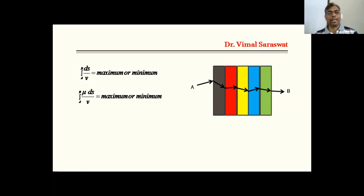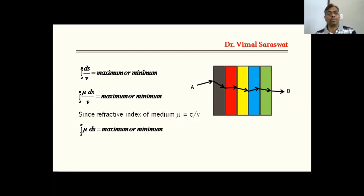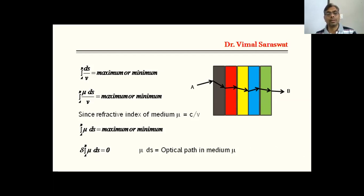Or, the integral from A to B of mu times ds is equal to maximum or minimum, since the refractive index of a medium mu is equal to c over v, where c is the velocity of light in vacuum and v is the velocity of light in the medium. So the law in mathematical form becomes: the integral from A to B of mu ds equals maximum or minimum. Differentiating this equation, the differential of the integral from A to B of mu ds equals zero. Here, mu ds is known as the optical path in a medium having refractive index mu.